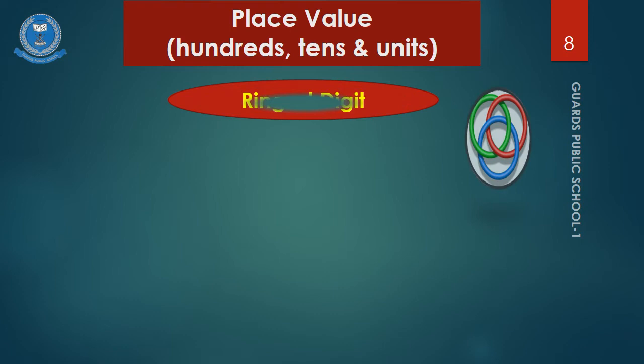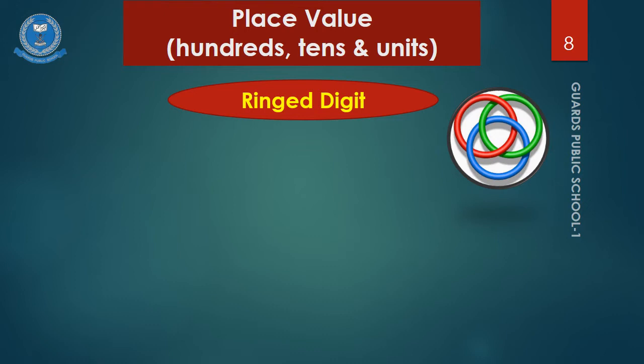We are moving to our next topic, ring digit. Come on, let's do an activity. In this activity, you have to find the value of ring digit. Now, look number one. If I put the ring in number nine, can you tell me, what is the place value of number nine? Yes, it's in the tenth position. So, it means, the place value of nine is nine tenths, or you can say, ninety.